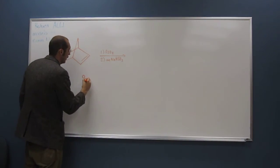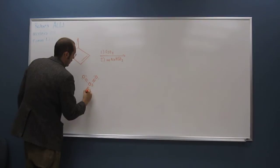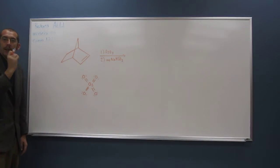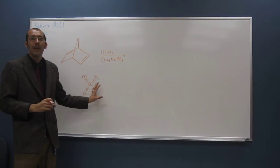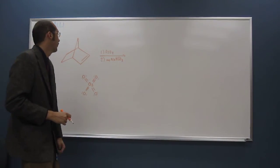So let's draw osmium tetroxide. So that's what it looks like. It's unlike potassium permanganate, it's uncharged.